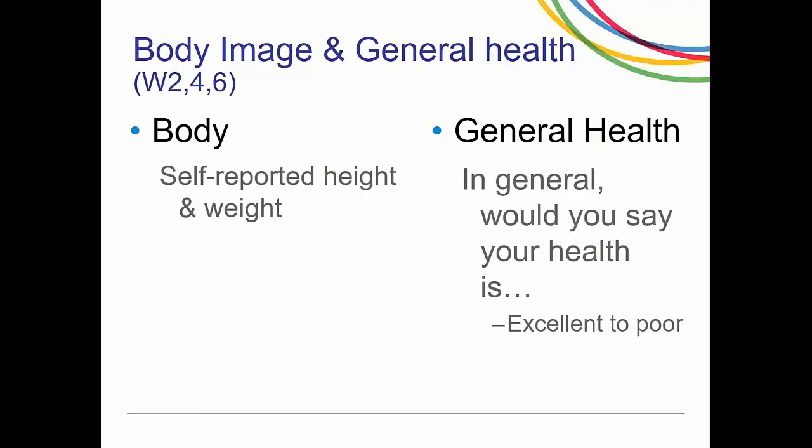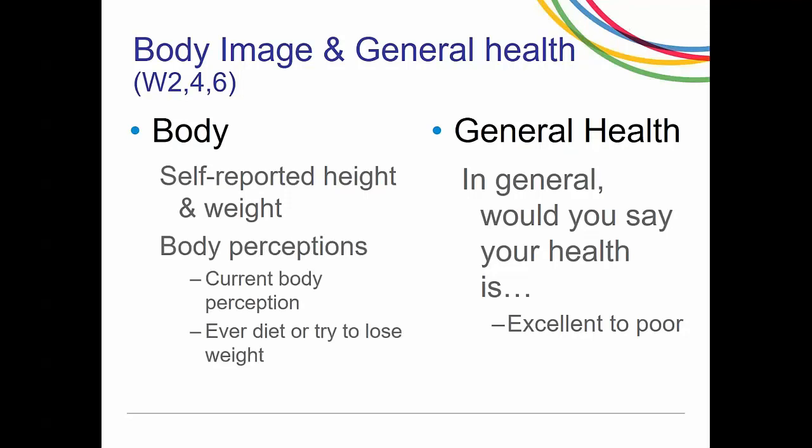Our next set of questions asks about body image and general health. Youth are asked about self-reported height and weight and their body perceptions — they're given a figure and asked about their current body perception, ranging from a skinny figure to a heavier weight figure. They're also asked whether they ever diet or try to lose weight. The general health question asks how they would rate their health, with responses ranging from excellent to poor. These are given in even wave data collections.